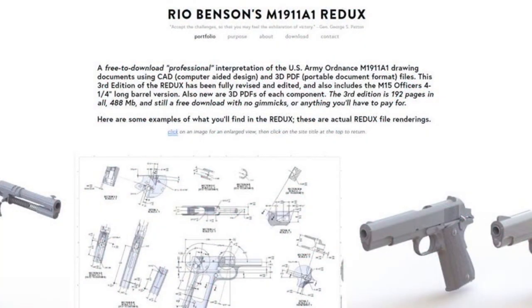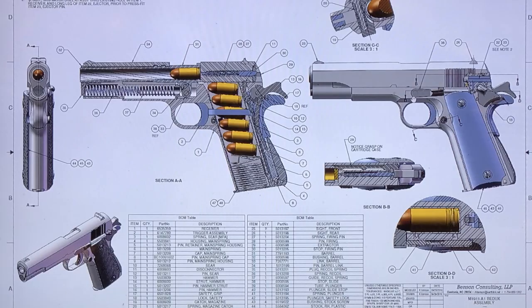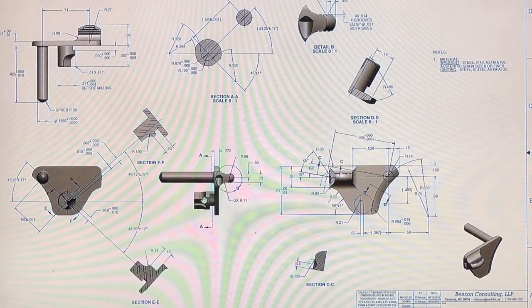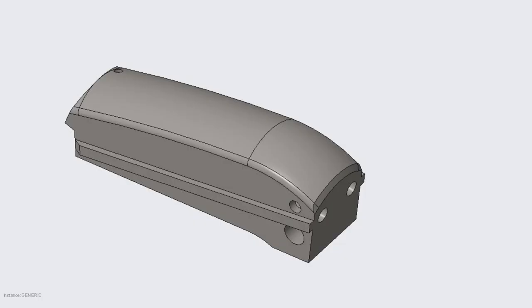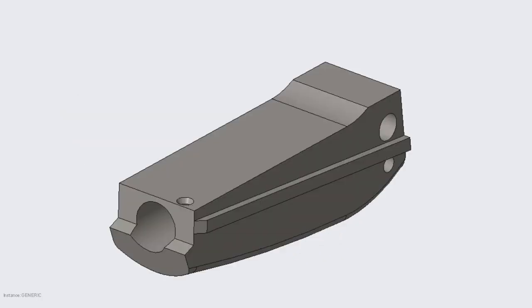So I started this adventure by downloading a full set of plans from Rio Benson. They're available on the internet for free and I will leave a link in the description. Mr. Benson has done an outstanding job documenting the 1911 from a dimensional standpoint. So this is the drawing that I started with. And after a few scotches, I mean hours, I had the part modeled.